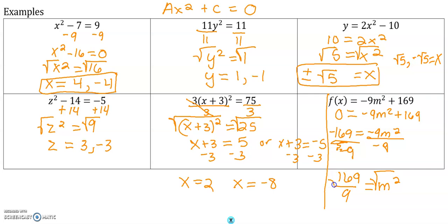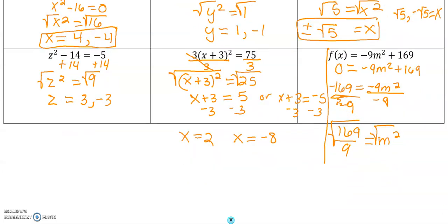We're going to take the square root of both sides. Now this actually turns out quite nice because 169 is a perfect square. So you can take the square root of the top. You can also take the square root of the bottom, and we'll get our answer.